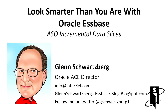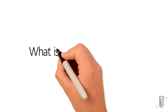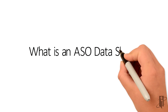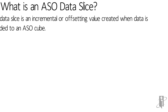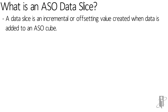Welcome, I'm Glenn Schwarzberg, and today we're going to be talking about ASO incremental data slices. So what is an ASO data slice? A data slice is an incremental or offsetting value created when data is added to an ASO cube.